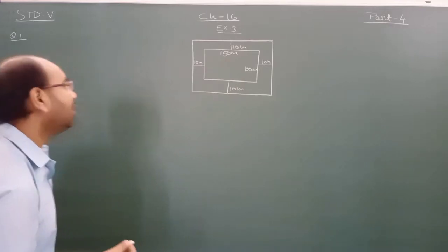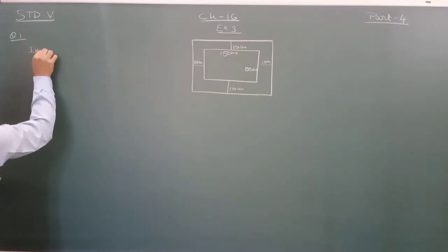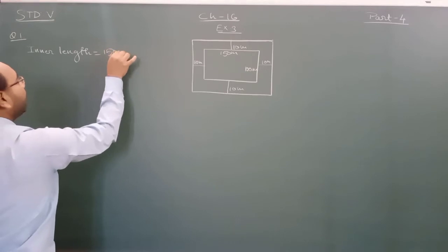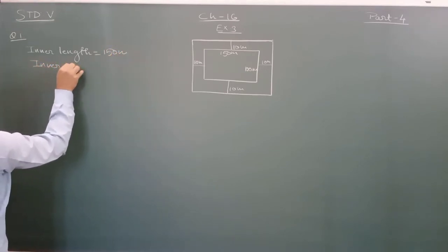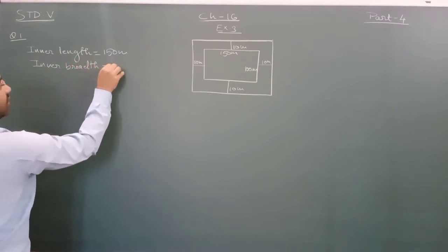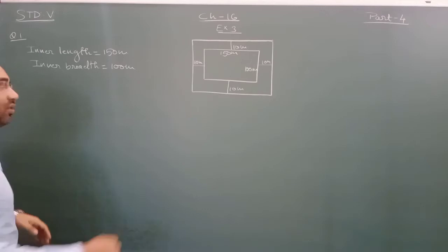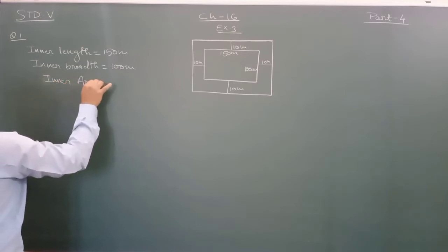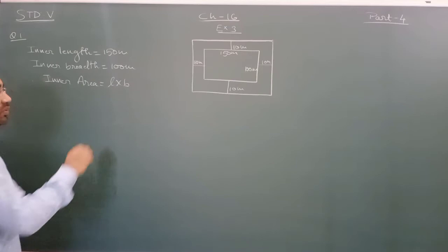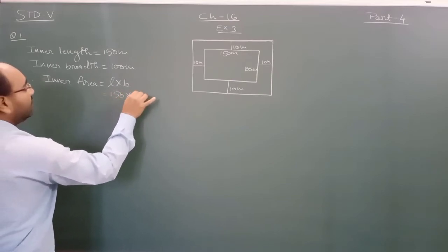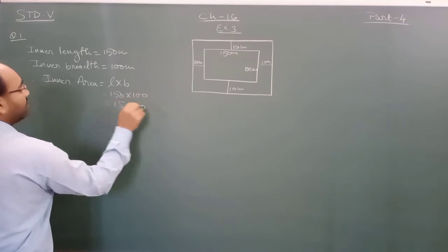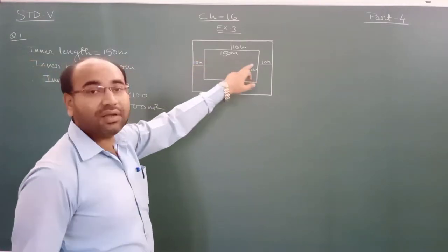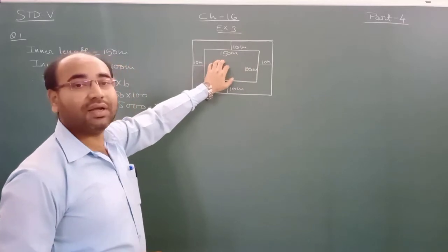We will start with the inside only. Inner length is equal to 150 meter. Same way, inner breadth is 100 meter. So inner area equals length into breadth, that is 150 into 100, and the answer will become 15,000 meter square. This is the rectangular field area.